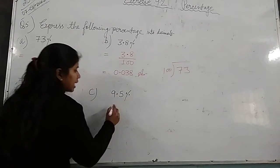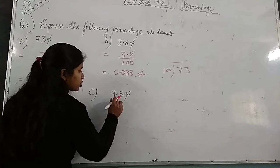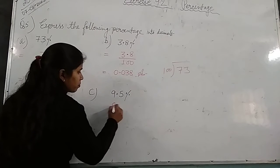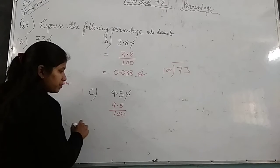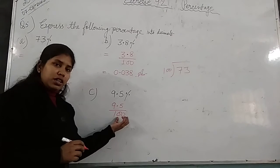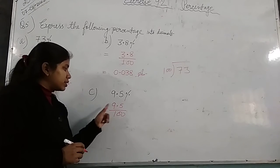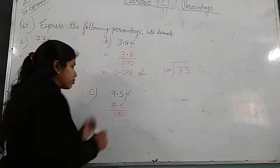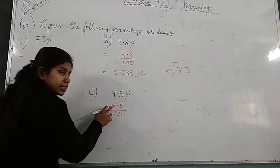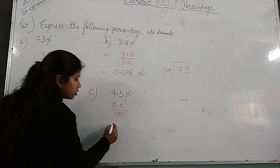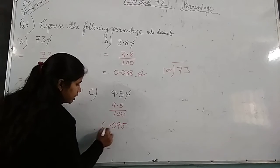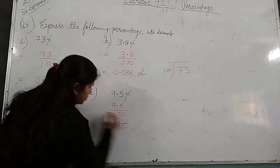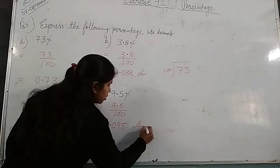Now next here: 9.5 percent. 9.5 upon 100. Now here are two zeros, so we place this point from right hand side, second digit. So here is only one digit, so we place here zero: zero, nine, five. And we place this point here. This will be your answer: 0.095.